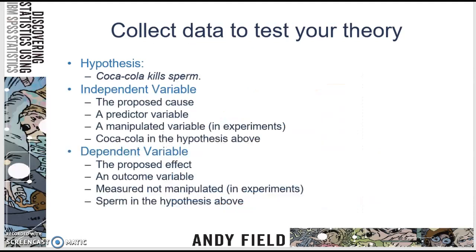So just some definitions. Your hypothesis — the example that he uses — we hypothesize that Coca-Cola kills sperm. Your independent variable is your proposed cause, also known as a predictive variable, and it is usually manipulated in experiments. Coca-Cola, in the hypothesis above, is the independent variable. We can have a group of people that consume Coca-Cola and a group that does not — that's how we've manipulated the independent variable: who gets it and who doesn't.